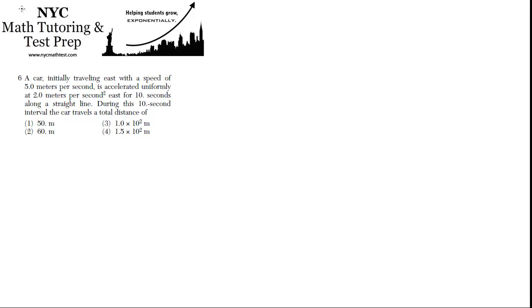Six, a car initially traveling east with a speed of 5 meters per second. Let's jot down the givens as we go here. So it's initially traveling east with a speed of 5 meters per second. So V initial equals 5 meters per second.